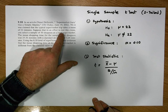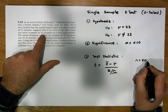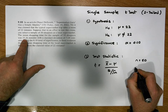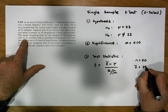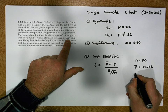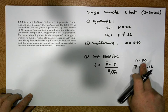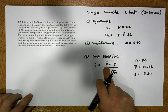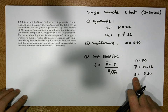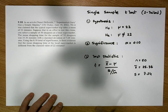From the scenario: the sample size n = 50, the sample mean x̄ = 25.36 minutes, and the sample standard deviation s = 7.24 minutes. The value of μ is the value of our null hypothesis, so μ = 22.